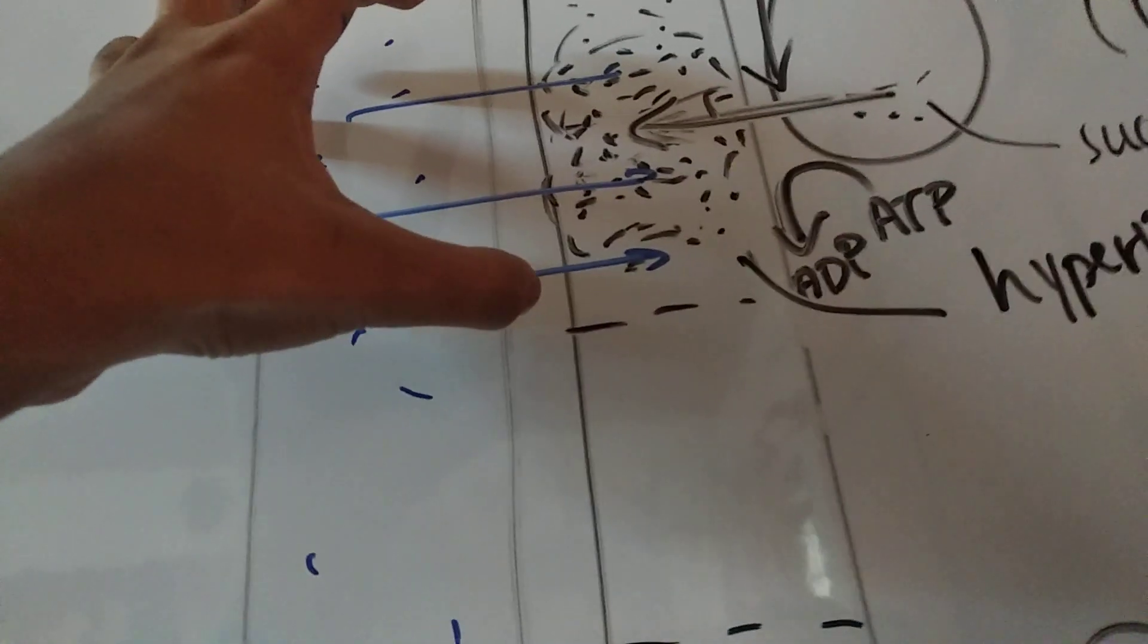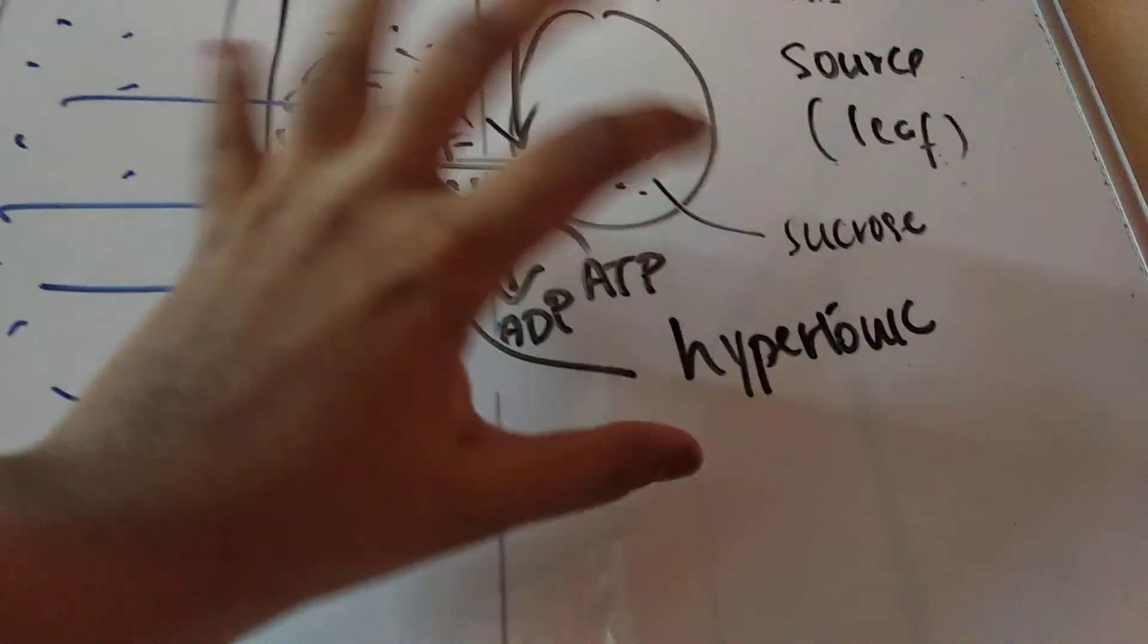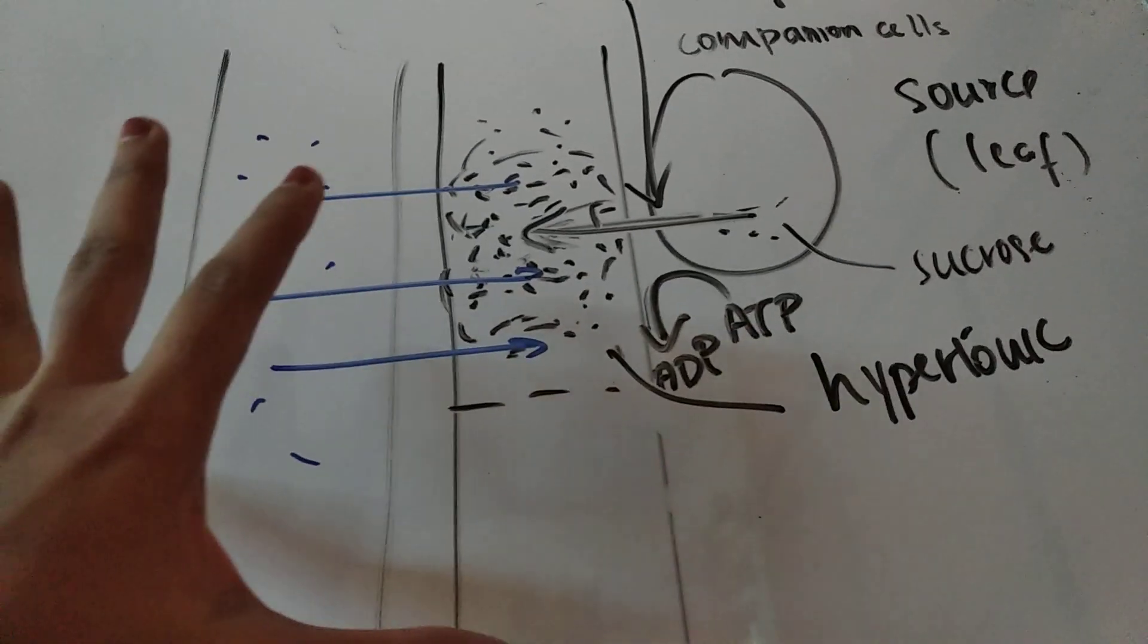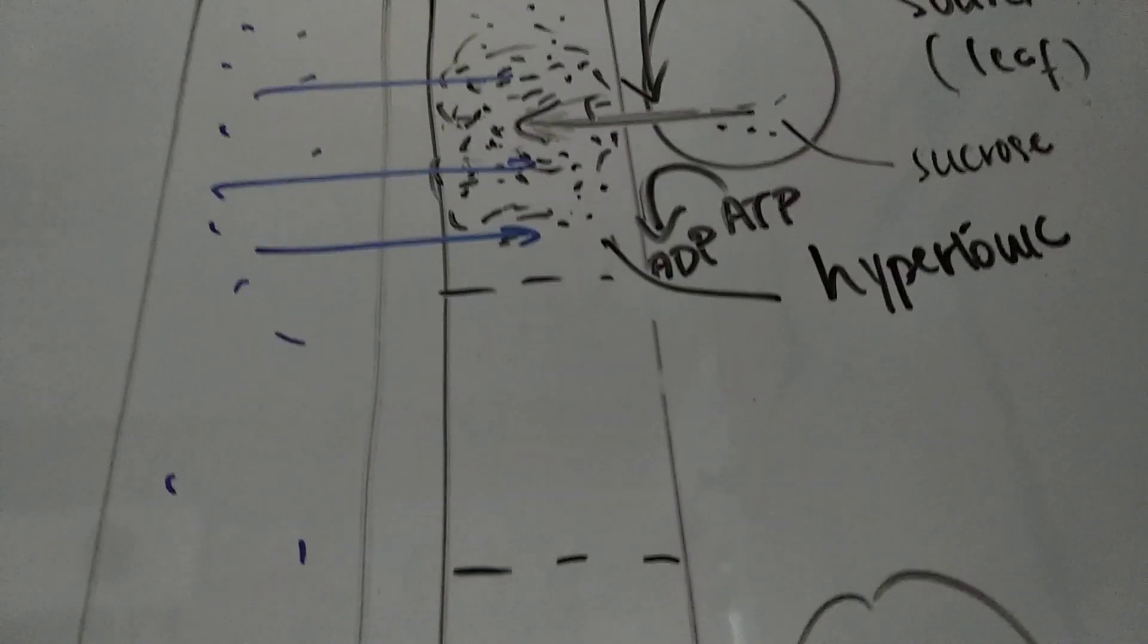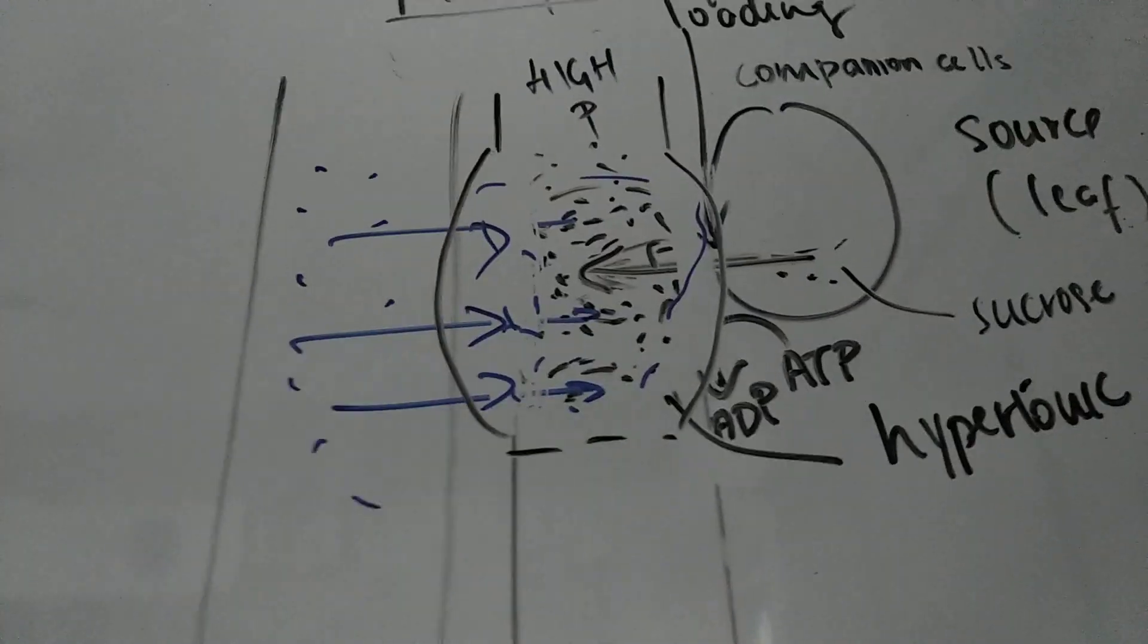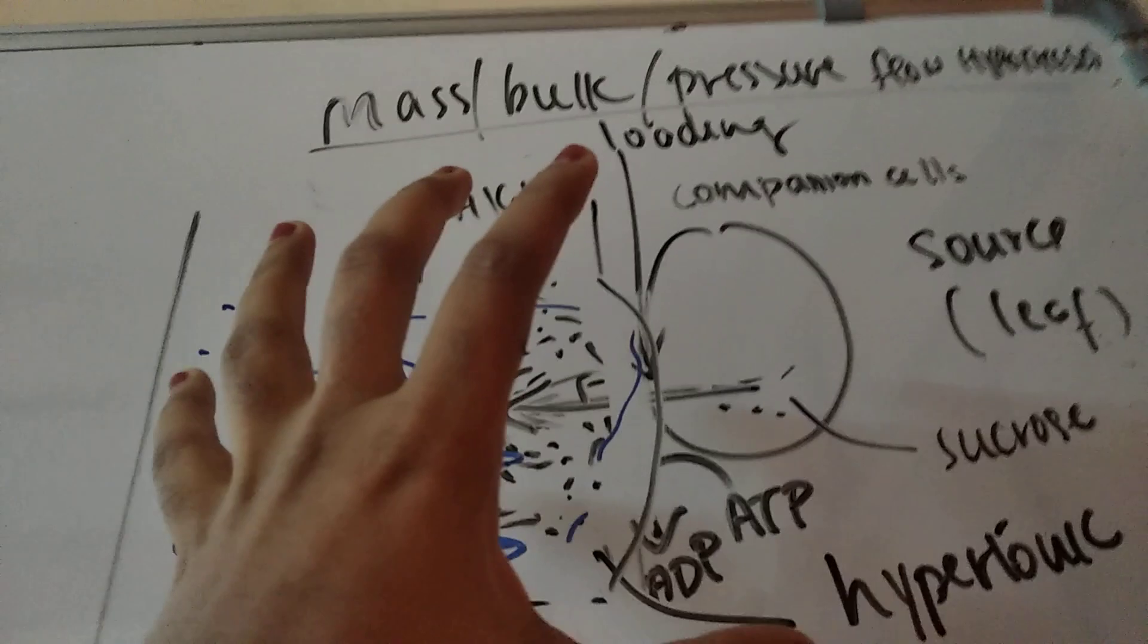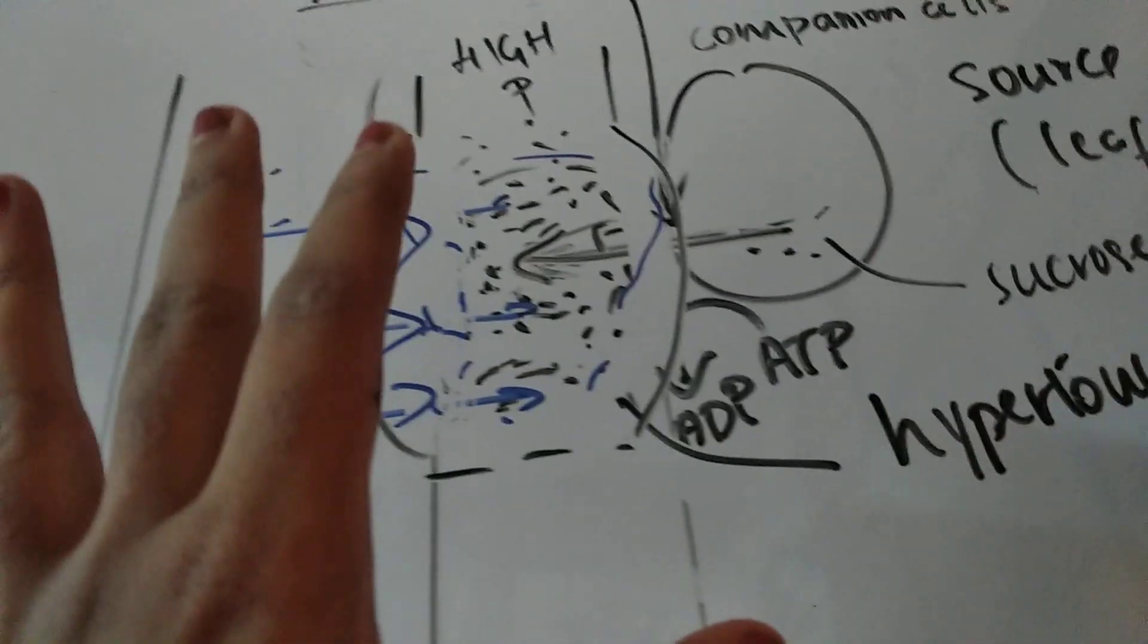A lot of water from the xylem actually enters the phloem, so the phloem becomes very, very turgid. Even though it has a lot of solutes, it is now extremely watery as well. This looks like our phloem is going to burst from this end. The pressure has become extremely high in this region.